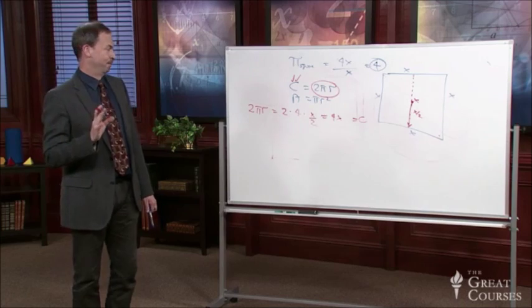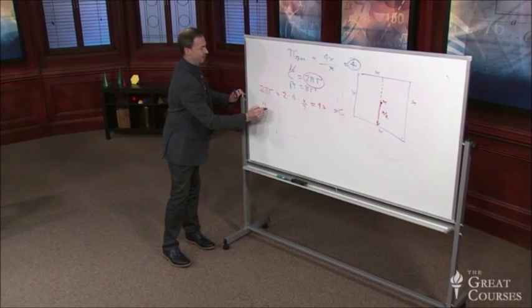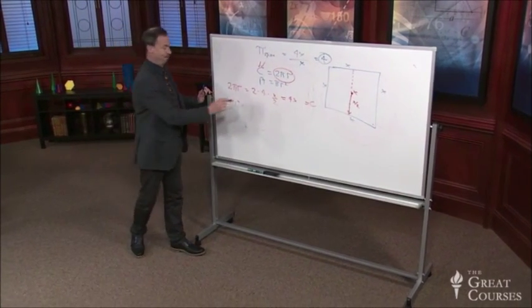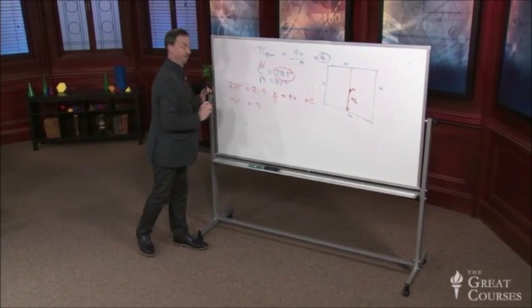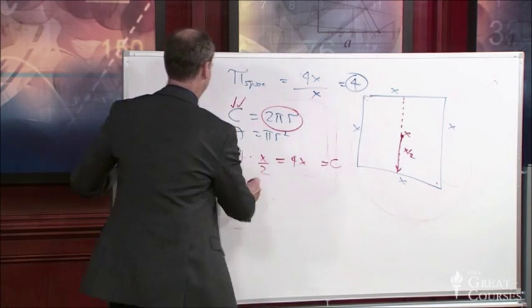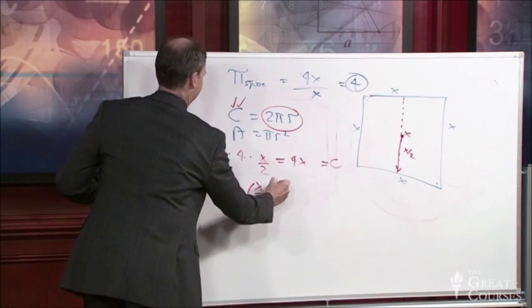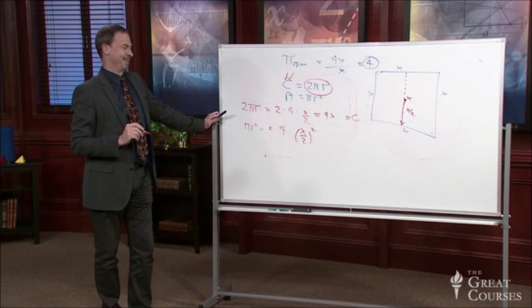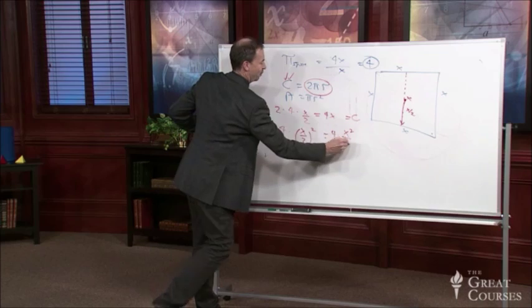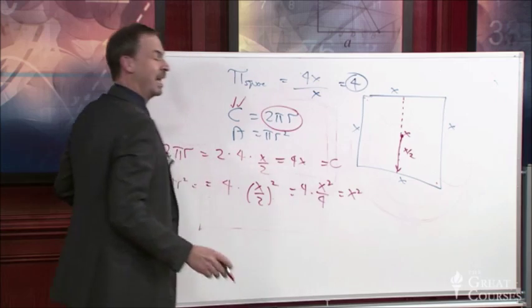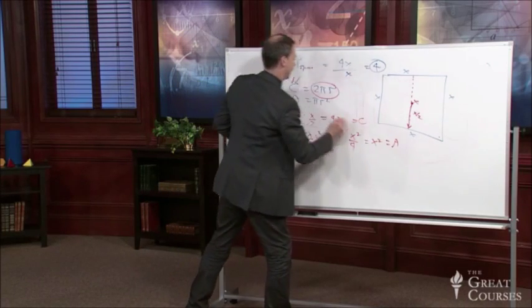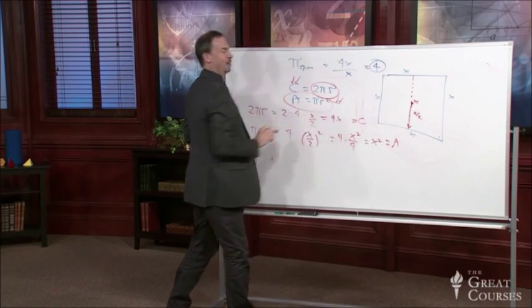The second formula, πr². Okay, this would be too good to be true if it works out. Let's try it. Pi, I hope, is 4. r squared will be half of x squared. Oh, look at this. 4 times x² over 4 is x². And what is x² in that picture? That is indeed the area of the square. This formula is working as well.